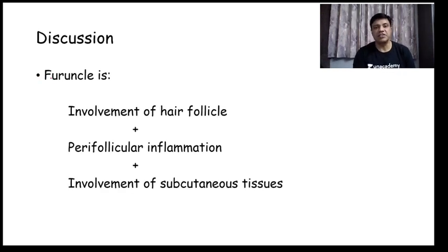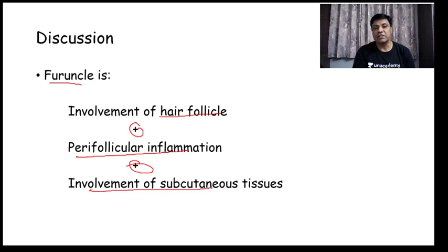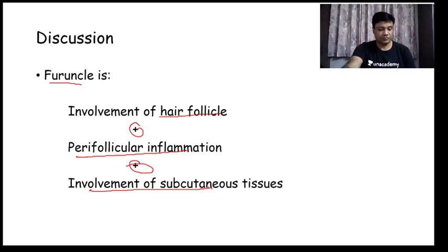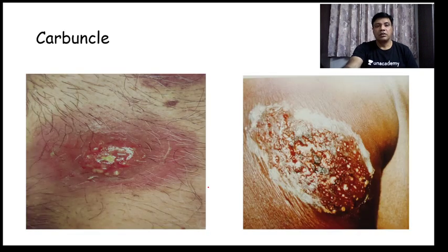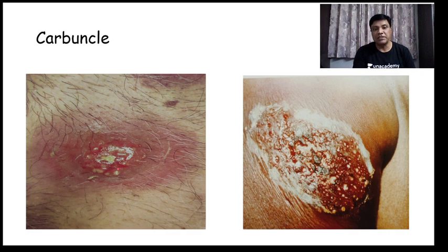The furuncle initially starts as folliculitis — it involves the hair follicle plus perifollicular inflammation, and there will be involvement of the subcutaneous tissues. A conglomerate of multiple furuncles joining together forms a carbuncle. In this patient you can see multiple sinus openings — these are multiple furuncles which have joined to form a carbuncle.